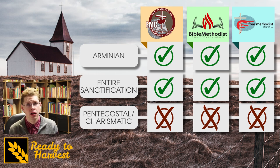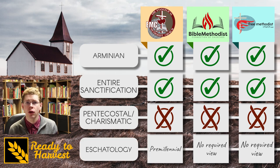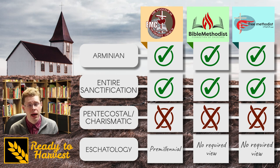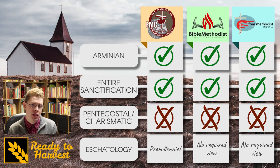On eschatology, the Evangelical Methodist Church is officially premillennial, while the Bible Methodists and Free Methodists don't have a required position. None of the denominations have a required position on the timing of the rapture.